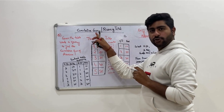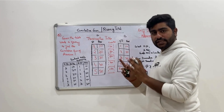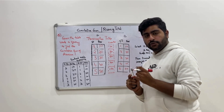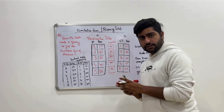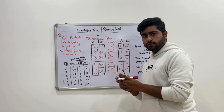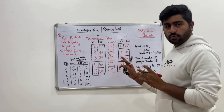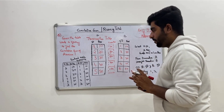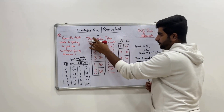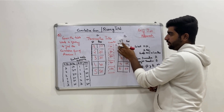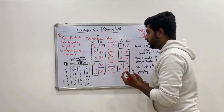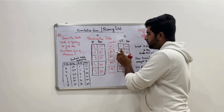Hi everyone, let's try to solve the cumulative sum question through self-join. In the previous video I explained what exactly is cumulative sum, what are the real use cases used in the industry, and why a sum over windows function is the most optimal approach. But let's try to solve this through a self-join. A self-join is when a table joins with itself — it's a very simple concept.